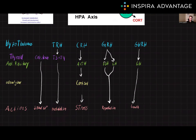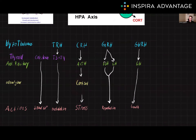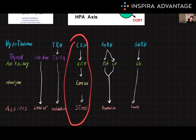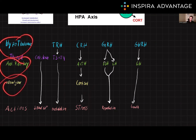Next up we have CRH, or corticotropin-releasing hormone. This hormone stimulates the release of ACTH in the anterior pituitary, which in turn stimulates the release of cortisol through the adrenal gland. CRH plays a role in the body's response to stress, as well as regulating the immune system, blood pressure, and glucose metabolism. This is known as the HPA axis, or hypothalamus-pituitary-adrenal axis.